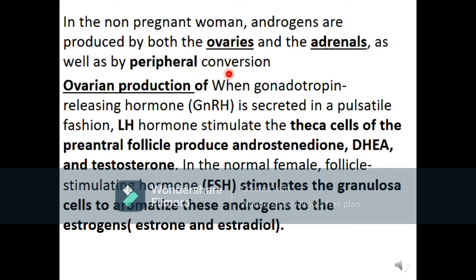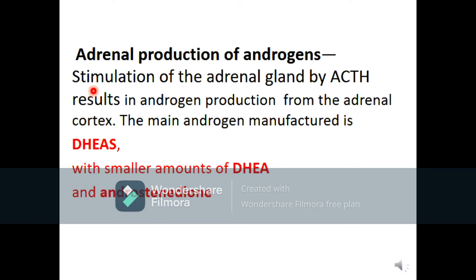In the non-pregnant human, androgens are produced by the ovary, adrenal gland, and peripheral conversion. Ovarian production occurs by the effect of GnRH, secreted in pulsatile fashion. LH hormone acts on cells of the pre-antral follicle and leads to production of androstenedione, DHEA, and testosterone. FSH hormone, secreted from the pituitary gland, acts on granulosa cells in the ovary to aromatize these androgens to estrogen — either estrone or estradiol.